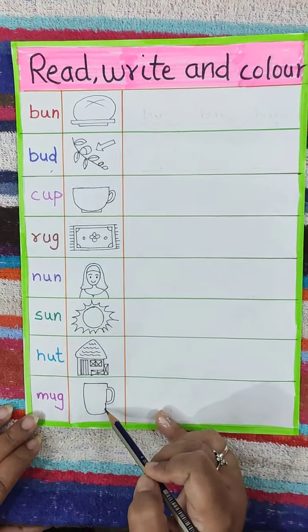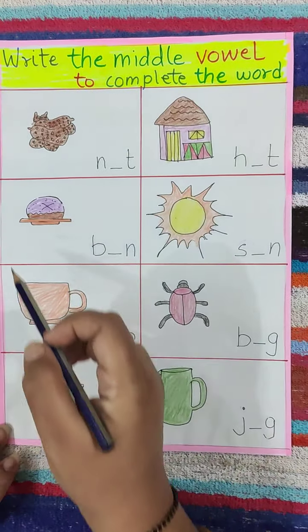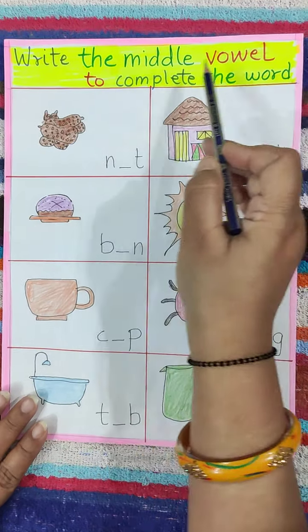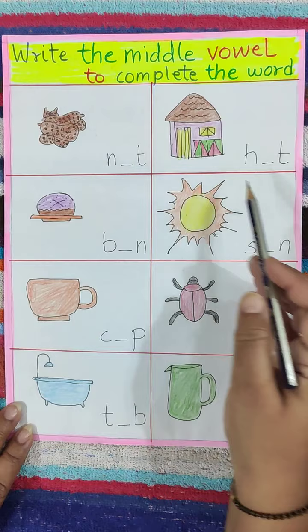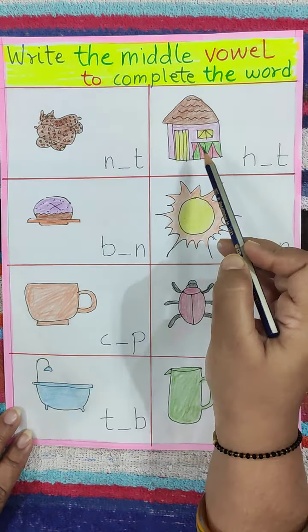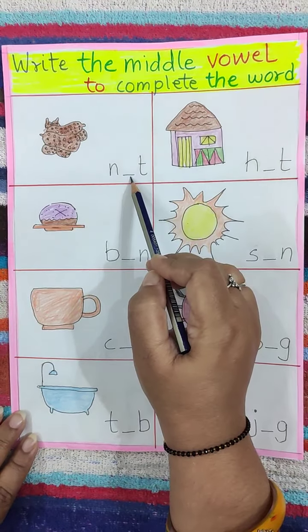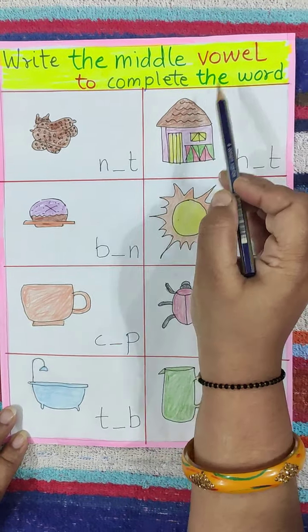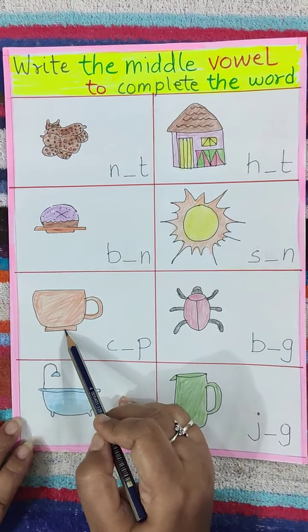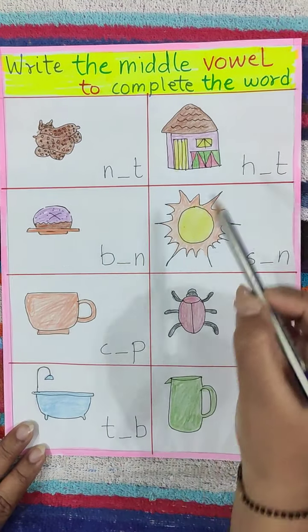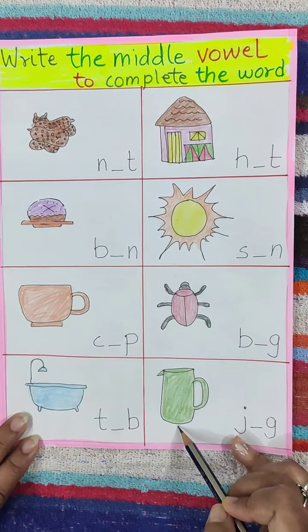Okay? Now see here children. Here is the heading: Write the middle vowel to complete the word. All these are U sound words and pictures are being made. You have to identify the picture and write the correct vowel. Okay? Now here is nut, here is bun, here is cup, here is tub, here is hut, here is sun, here is bug, and here is jug.